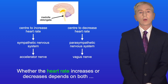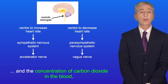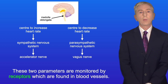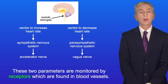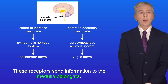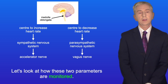Whether the heart rate increases or decreases depends on both the blood pressure and the concentration of carbon dioxide in the blood. These two parameters are monitored by receptors found in blood vessels, and these receptors send information to the medulla oblongata.